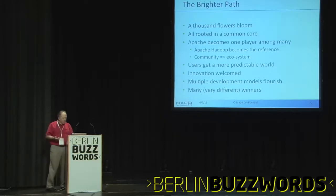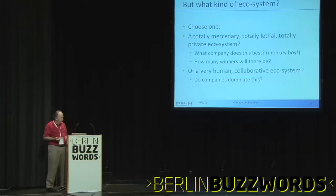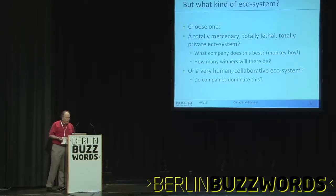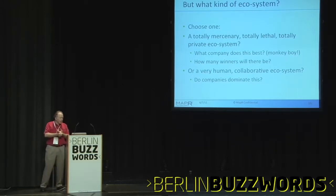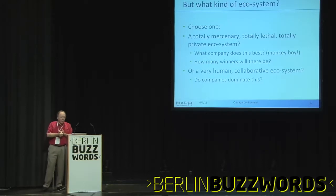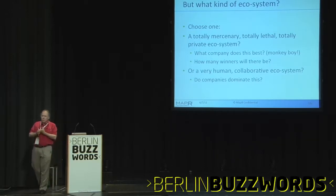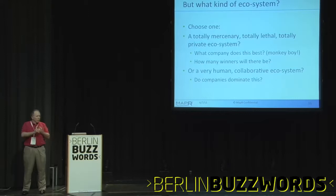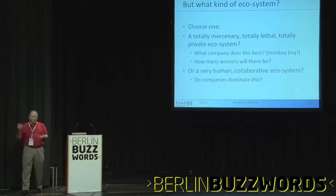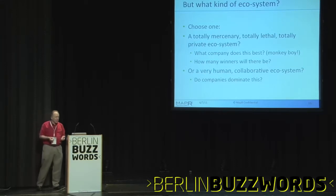We could have a totally mercenary, totally lethal, totally private ecosystem — which company does this best? Think Monkey Boy. How many winners will there be? We choose one, zero, or a very large number. There are only three nice numbers: zero — it won't happen; one — this is the only way it happens; or basically unlimited — it could happen any way you like. And we choose which one of those three we're going to have. I like the last one.